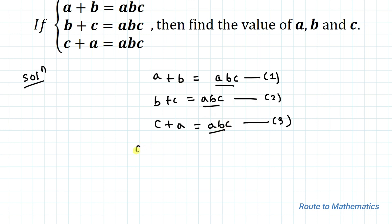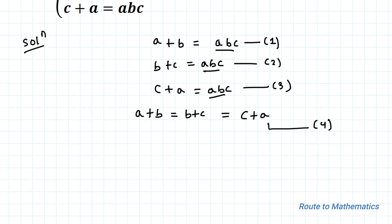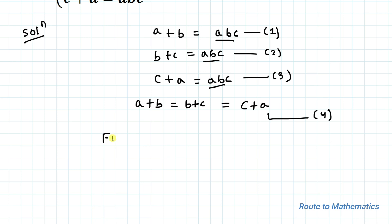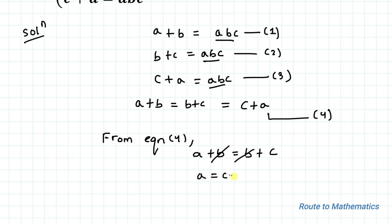So we can write: a plus b equals b plus c equals c plus a. Let's take this as equation 4. From equation 4, we write a plus b equals b plus c. The positive b cancels on both sides, giving us a equals c. Let's take this as equation 5.